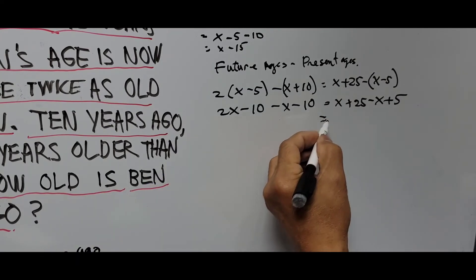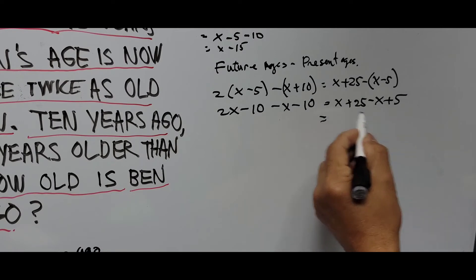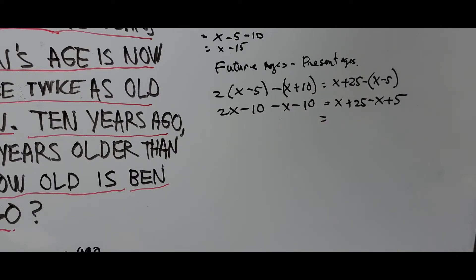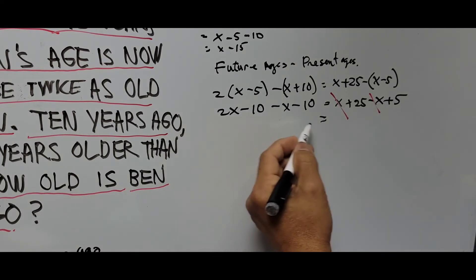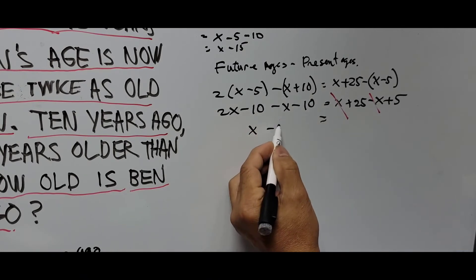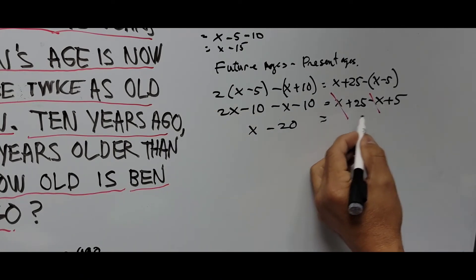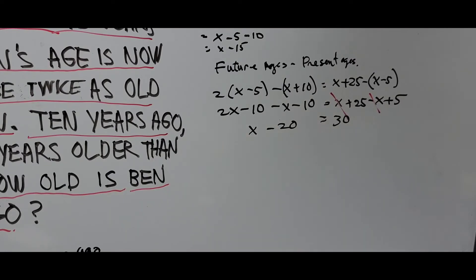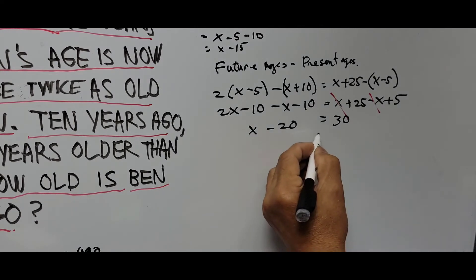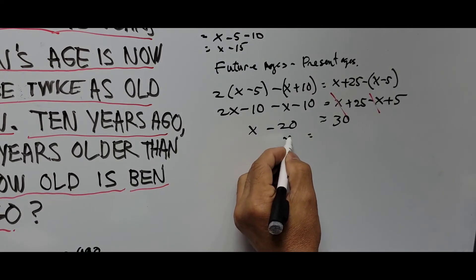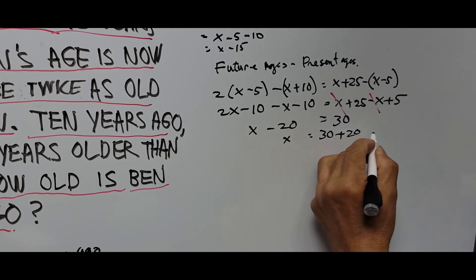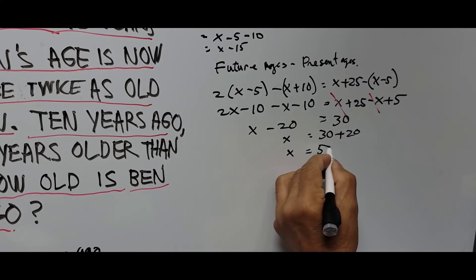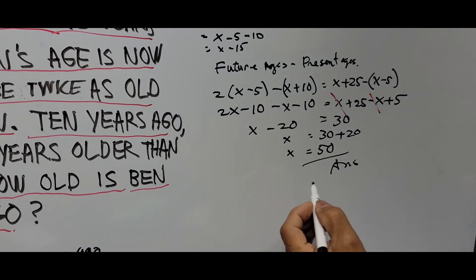Simplifying further: on the left side, 2x minus x gives x, and minus 10 minus 10 gives minus 20. On the right side, the x's cancel out, and 25 plus 5 gives 30. So x minus 20 equals 30. Moving the 20 to the other side, x equals 50. That is Ben's age 10 years ago.